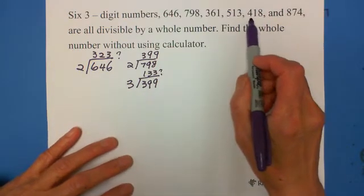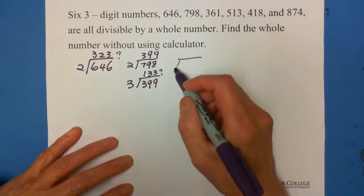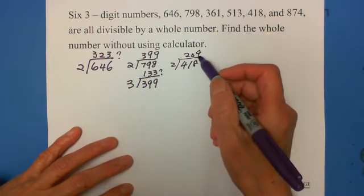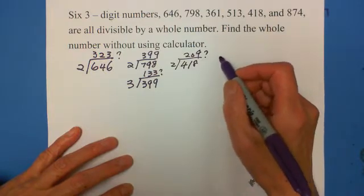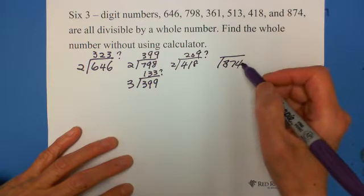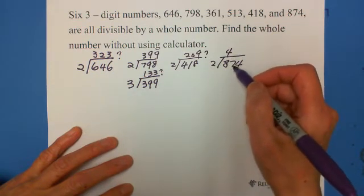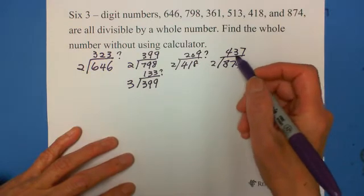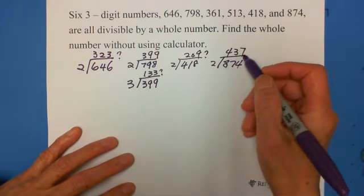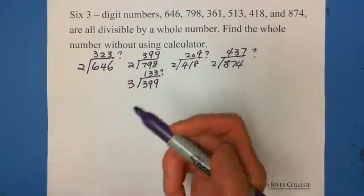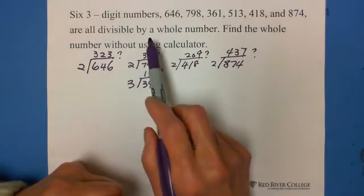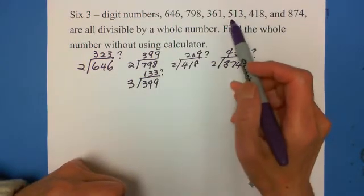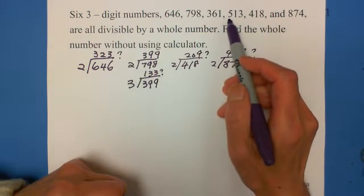418 is even, divided by 2 is 209, which is also an odd number. 874 divided by 2 is 437, also an odd number not divisible by 3 or 4. So if we do this way, we cannot find which number divides all these numbers. So let's see this number, but we didn't check this number.